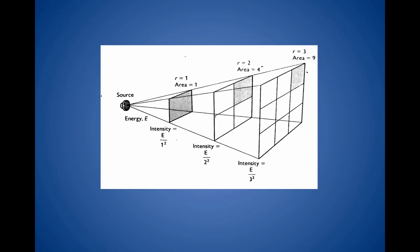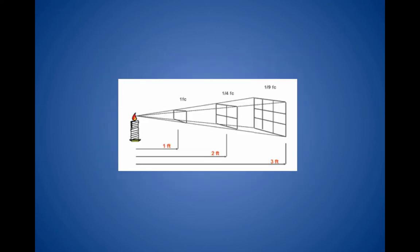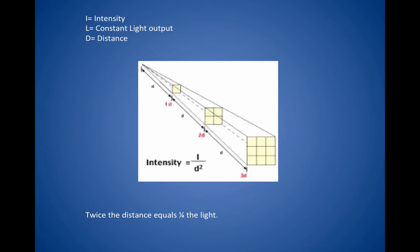Another way of looking at it: half the distance equals four times the light. So with a candle, one foot candle lights one square, but at two feet, that square is divided by four — only one fourth the intensity. At three feet, it's one ninth the intensity, and so on.